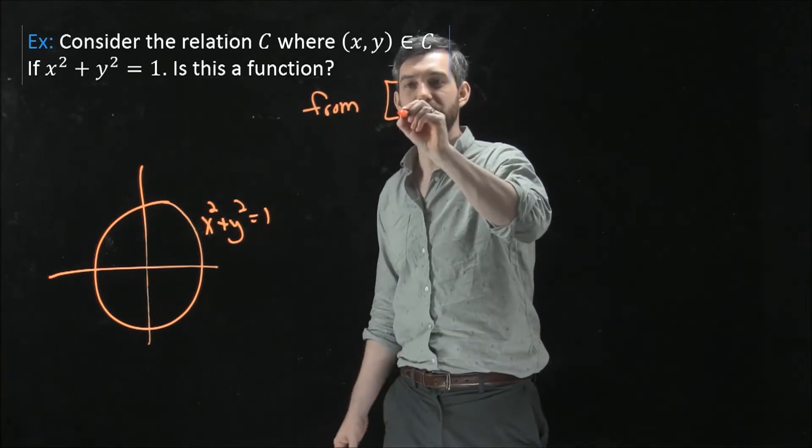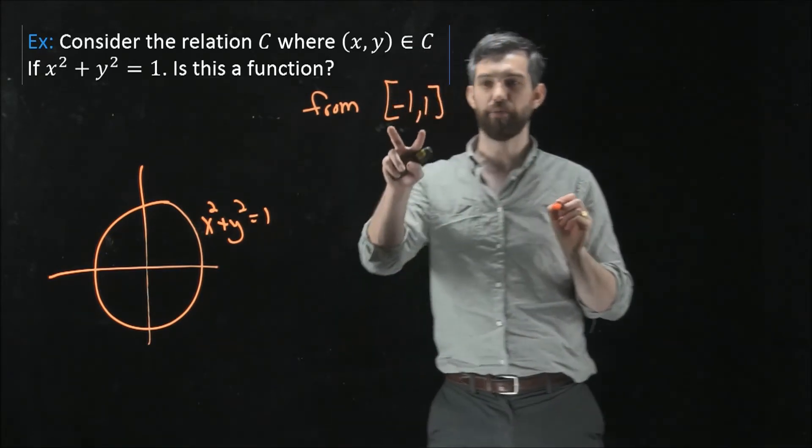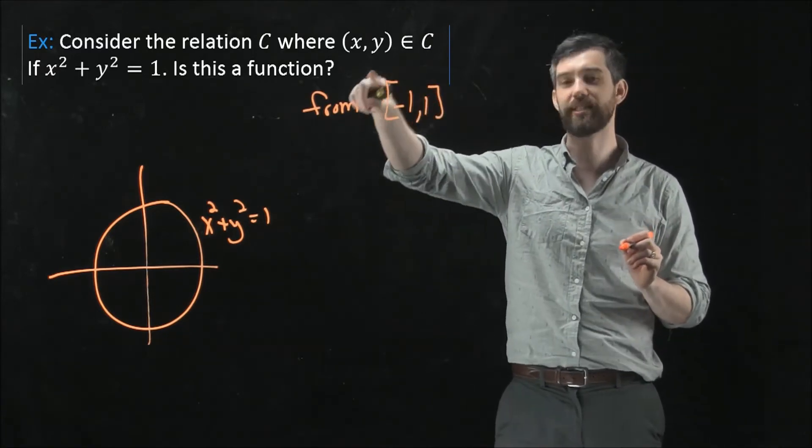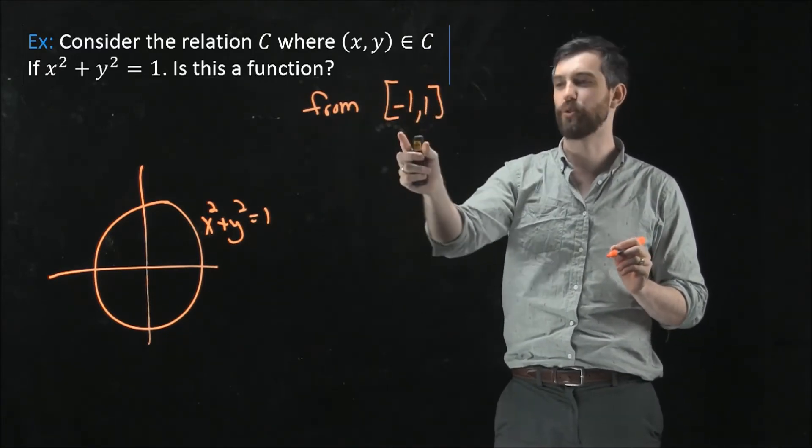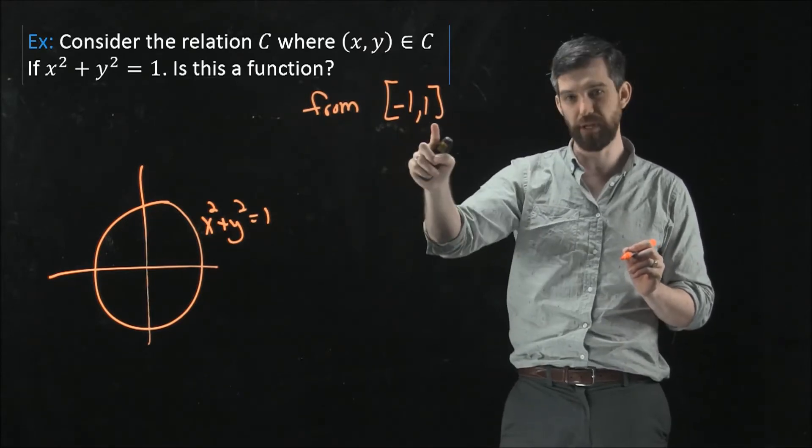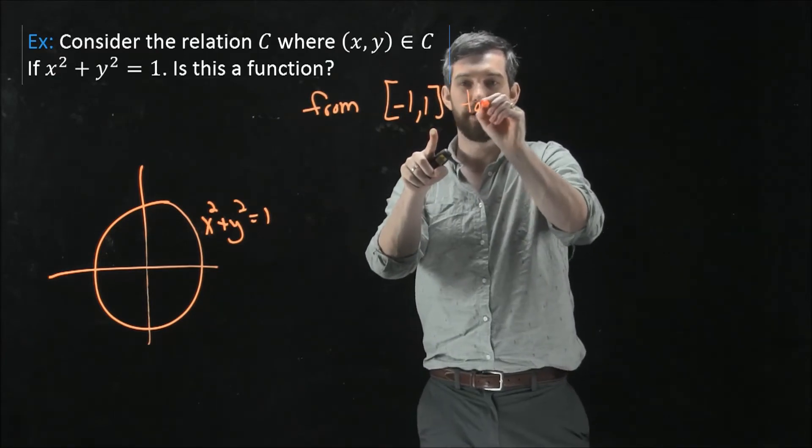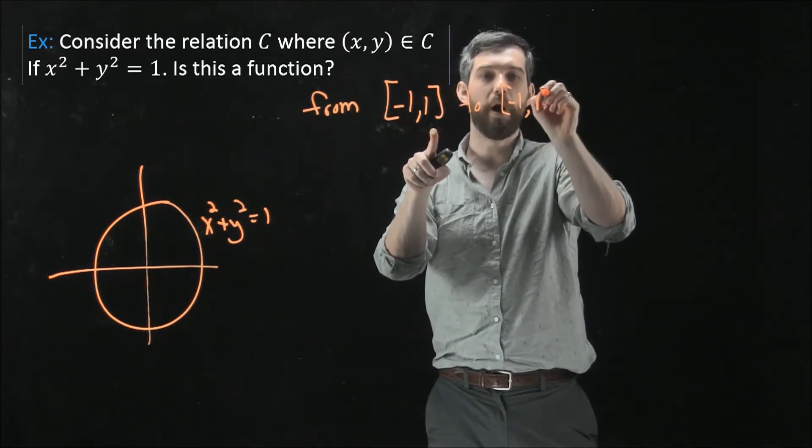minus one to one. That's my, with my square brackets, this is my interval notation. So this is the set of all points between minus one and one, including the endpoints. Is it a function from this back to the minus one, one again?